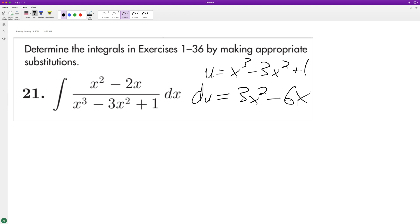minus 6x. And if you look on top here, this is similar, but instead we need to factor out a 3, so we get x squared minus 2x.